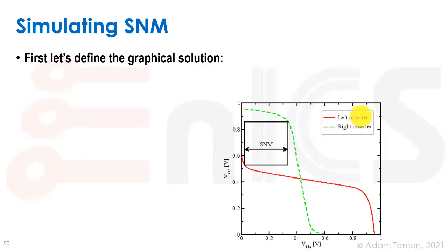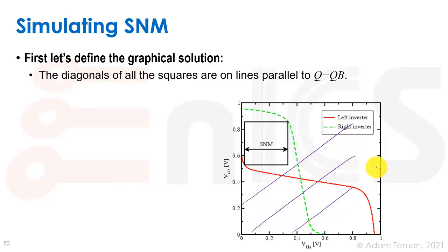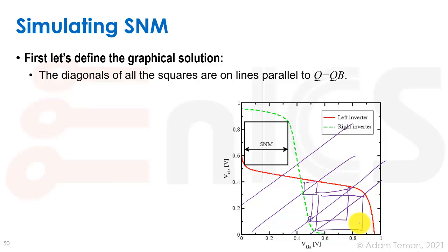Let's define the graphical solution first. This is our picture of the SNM calculation. What exactly is the size of the largest square? If we want to see the size of the squares, we take diagonals — X equals Y, or Q equals QB — and a square is actually the area that fits into a diagonal, so each of these defines a square. The largest diagonal that hits both lobes is going to be the maximum size of the square.